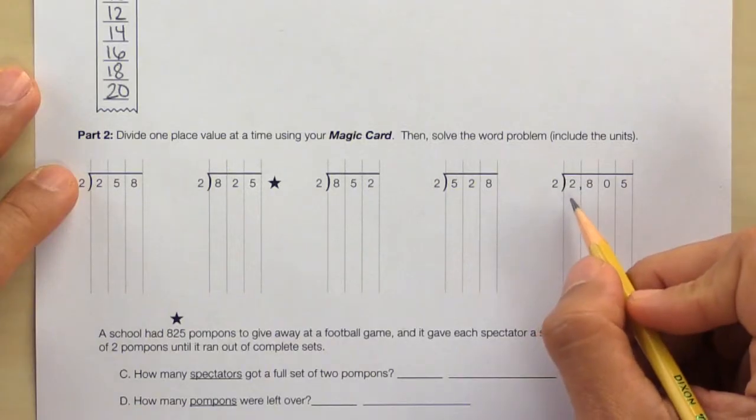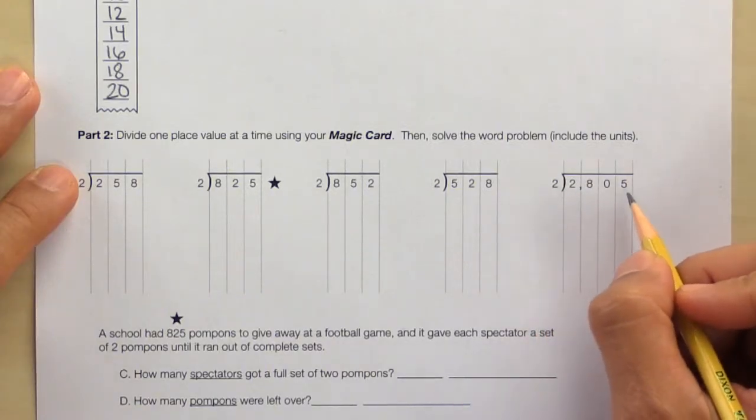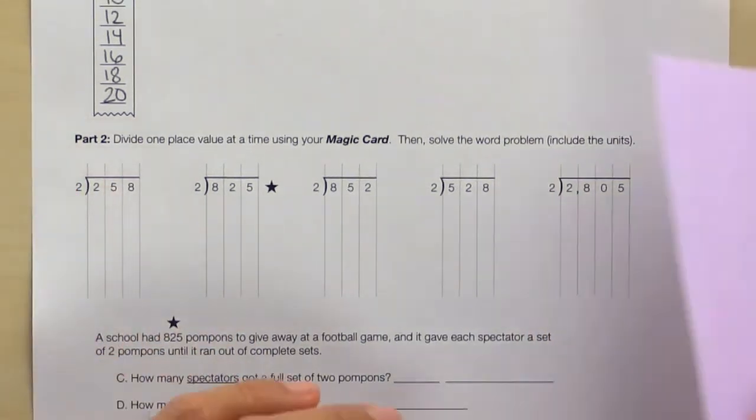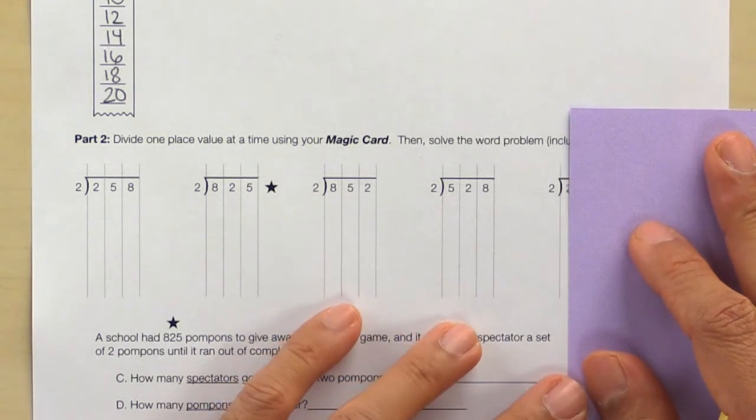Let's go over one example in part 2 that has zeros in the dividend and in the quotient. Here is 2805 divided by 2. Let's use our magic card to cover up. Slide over.